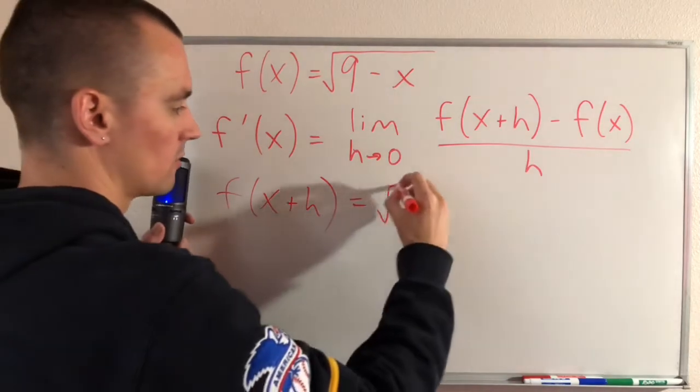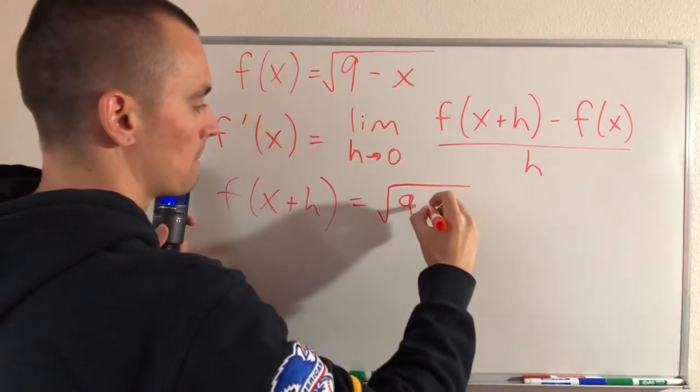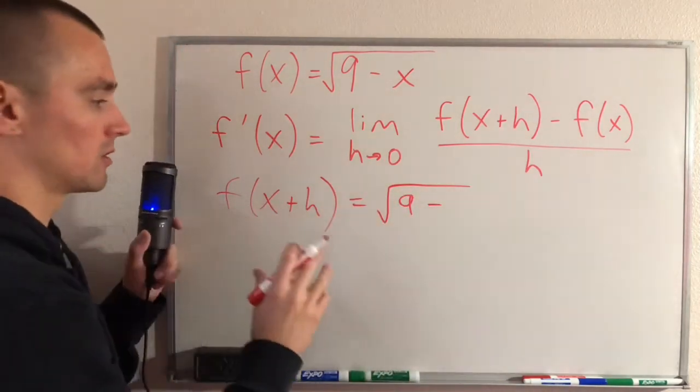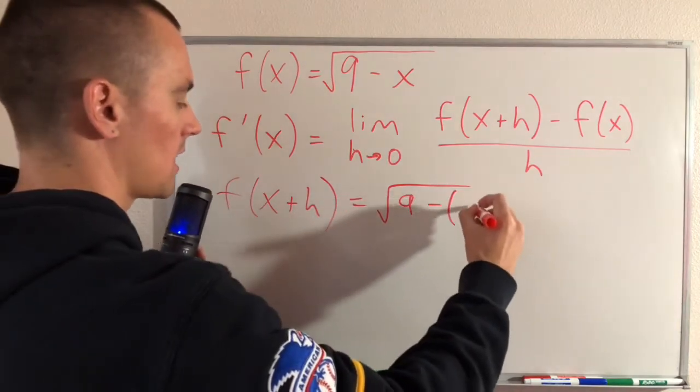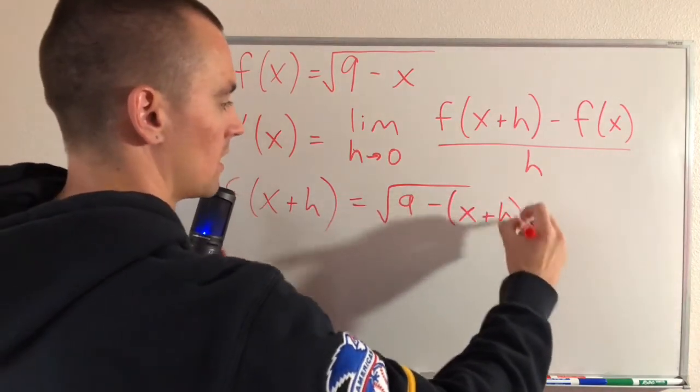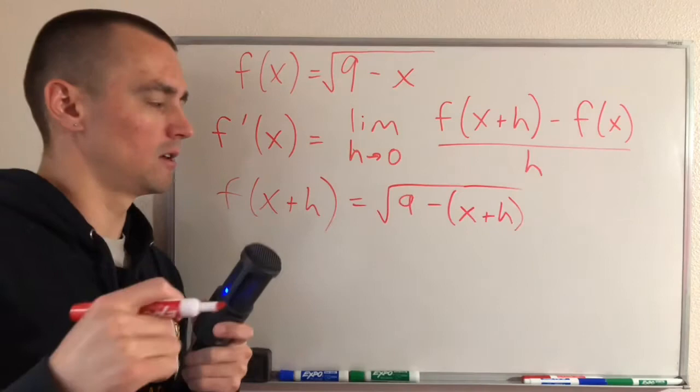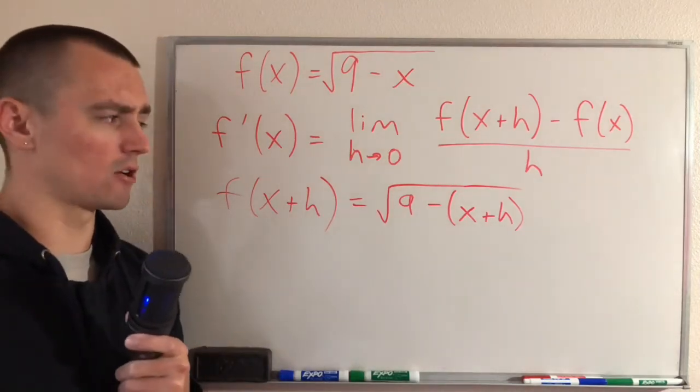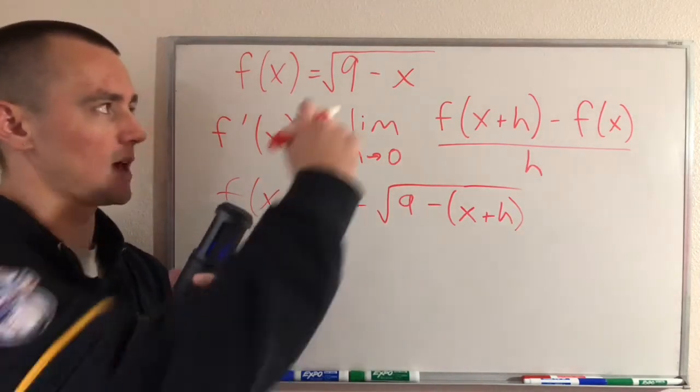So if we do that, we're going to get the square root of 9 minus, and then you need to make sure that you're putting it in parentheses, x plus h. And it is really important, sometimes the parentheses aren't going to matter. It really depends on what operations are being done to the x.